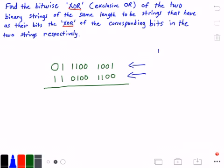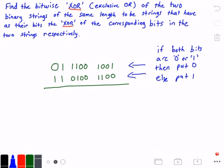Basically if both bits are zero or one, then we're going to put a zero or the answer zero. So here I put if both bits are zero or one, then put zero. Else we're going to put one. And I put those in quotes as well, okay.